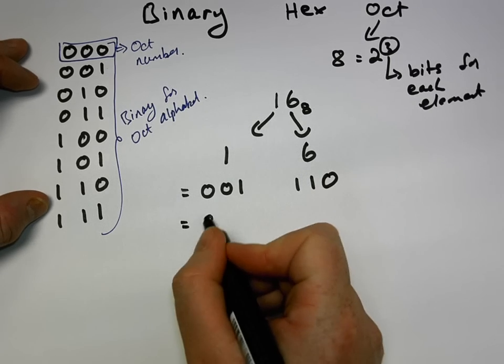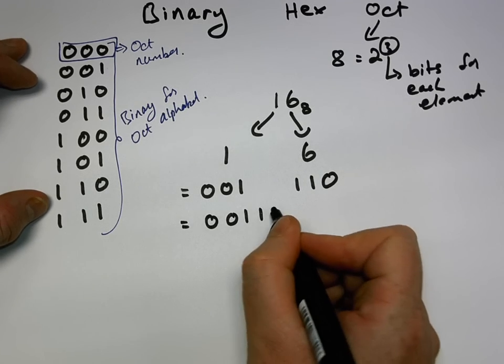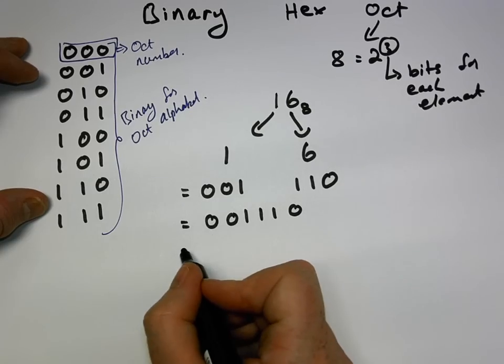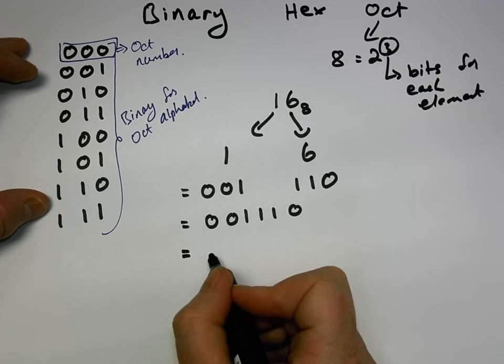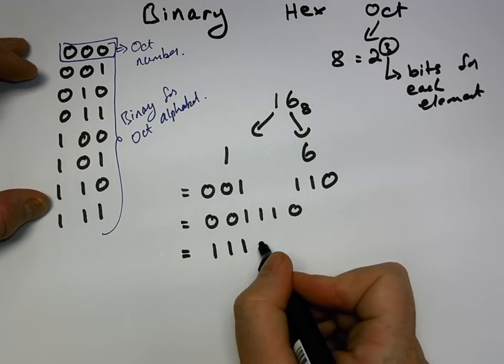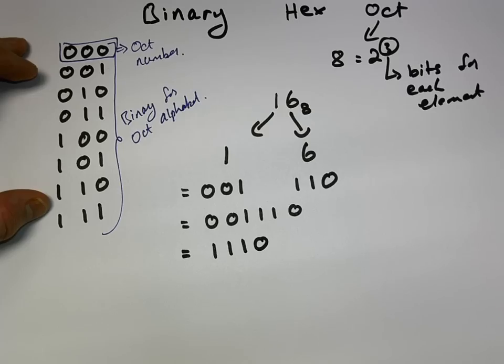And then we simply join these back up together, removing the least significant digits. We come out with one, one, one, zero. Sorry, not the least significant, the insignificant digits.